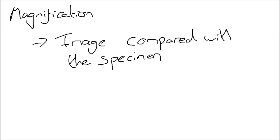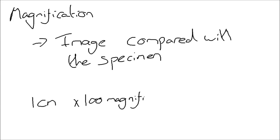For example, if something that you measure is one centimetre and you look at it through a magnifying glass or microscope with a hundred times magnification, the image that you would see would be a hundred centimetres in size. So that's basically what we're trying to work out by looking at magnification.